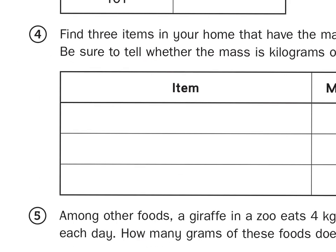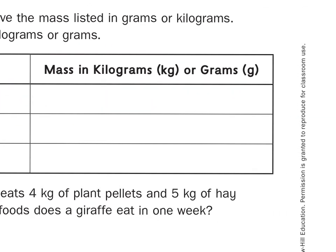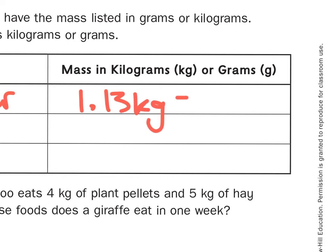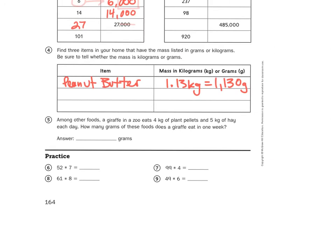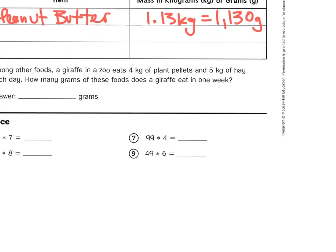So, for number 4, you just have to look around your house, and I would suggest your kitchen. And you just have to list a product or an item that has the weight listed, and then you have to list the amount, 1.13 kilograms, which is the equivalent of 1,130 grams. I'm sure there's a cereal box or a can of green beans somewhere in your pantry that you can look at to find two more items. And then, finally, I'm going to let you do the story problem yourself, which asks you a question in kilograms but wants the answer in grams. But let's take a look at the multiplication problems.